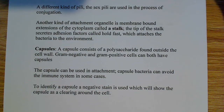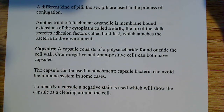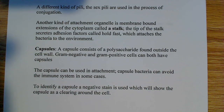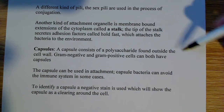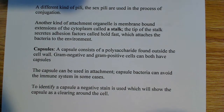Some bacteria — they can be gram-negative or gram-positive — will have capsules. A capsule consists of a polysaccharide coating, basically a protective coating around the bacterial cell, and it's found outside the cell wall. Both gram-negative and gram-positive cells can have capsules, but not all bacteria have capsules.